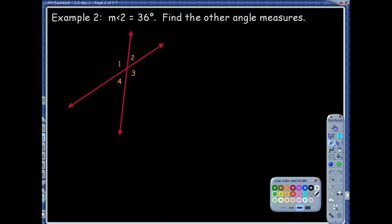For this next example they tell us that the measure of angle 2 is 36 degrees. We're supposed to find the other angle measures. Because they've got them numbered we need to find angle 1, the measure of angle 3, and the measure of angle 4. I got this, I can do this.